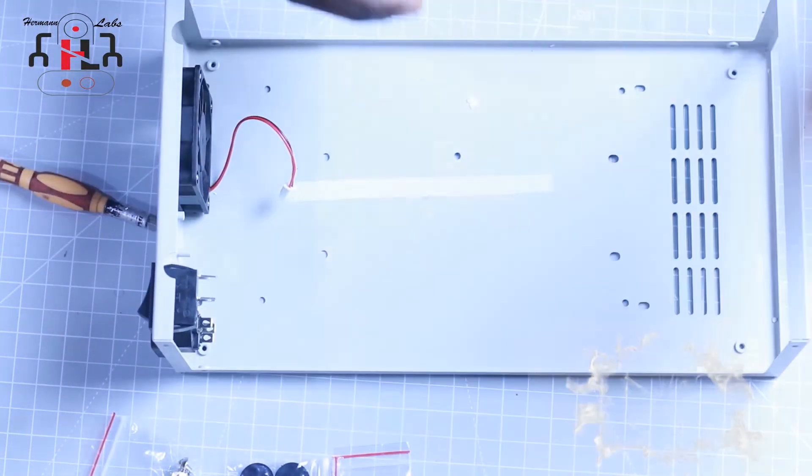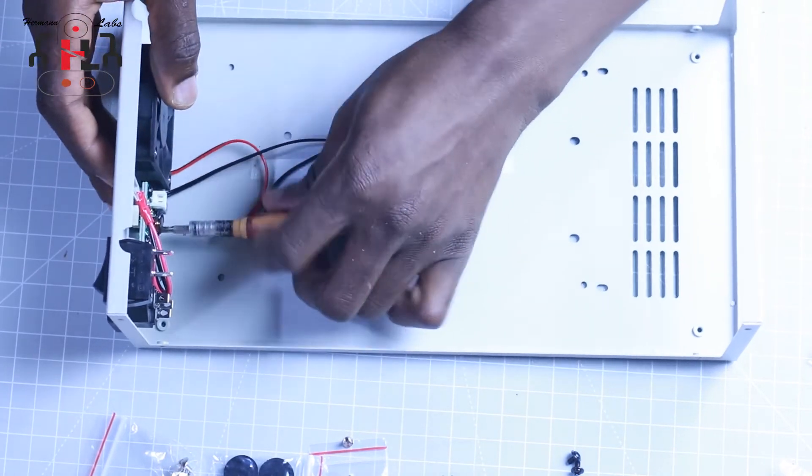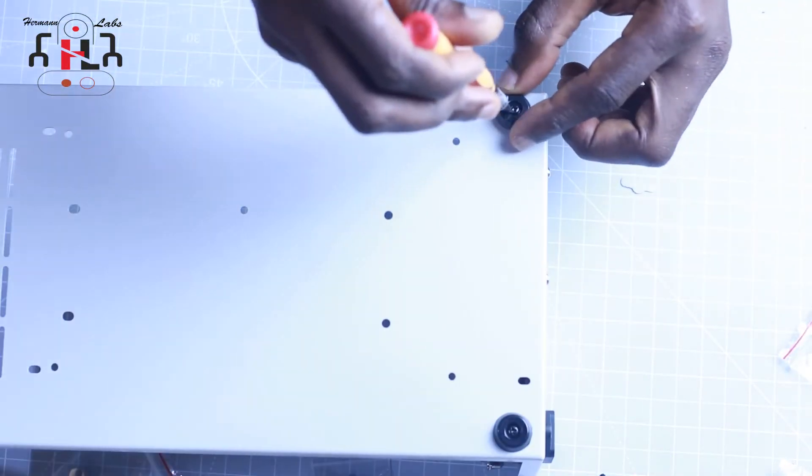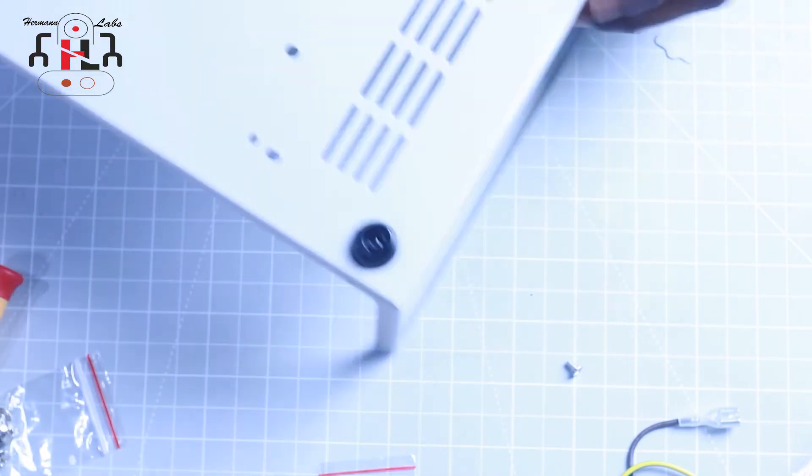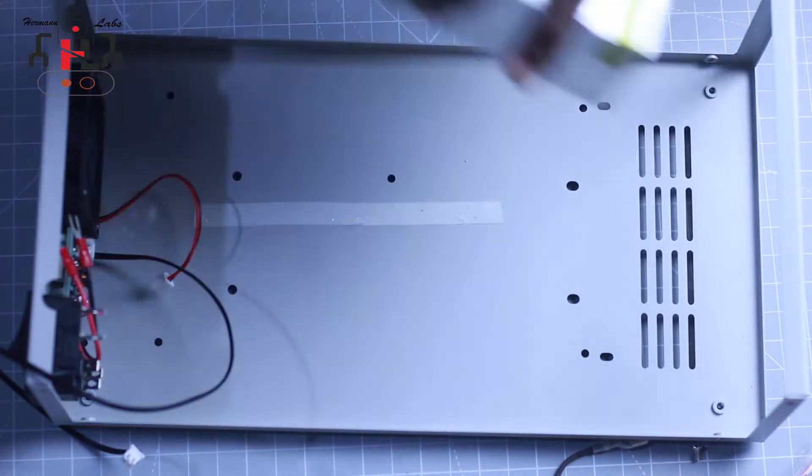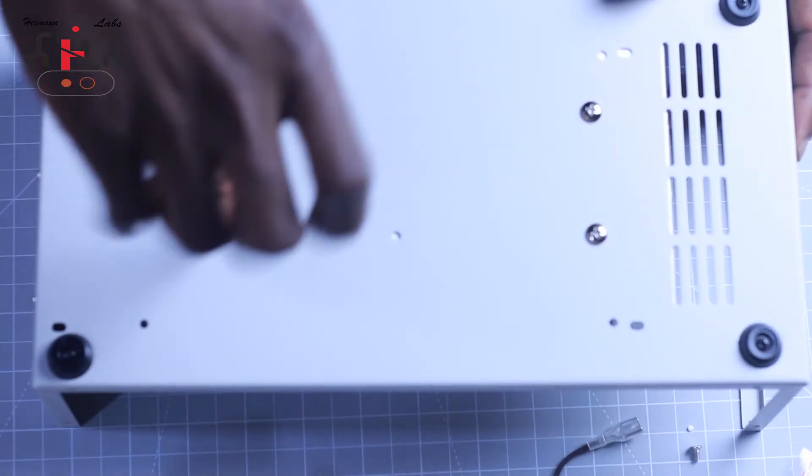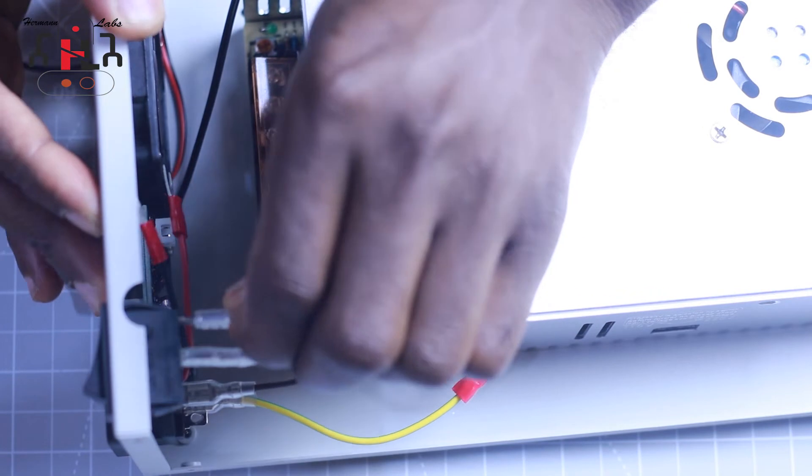We install the fan control electronic board and then we install the rubber feet for the case. Let's install the power supply into the case. Now we have to wire the power supply terminals to the case. At this point, we have to be careful not to miss the wiring connections. If not, we might destroy some parts.